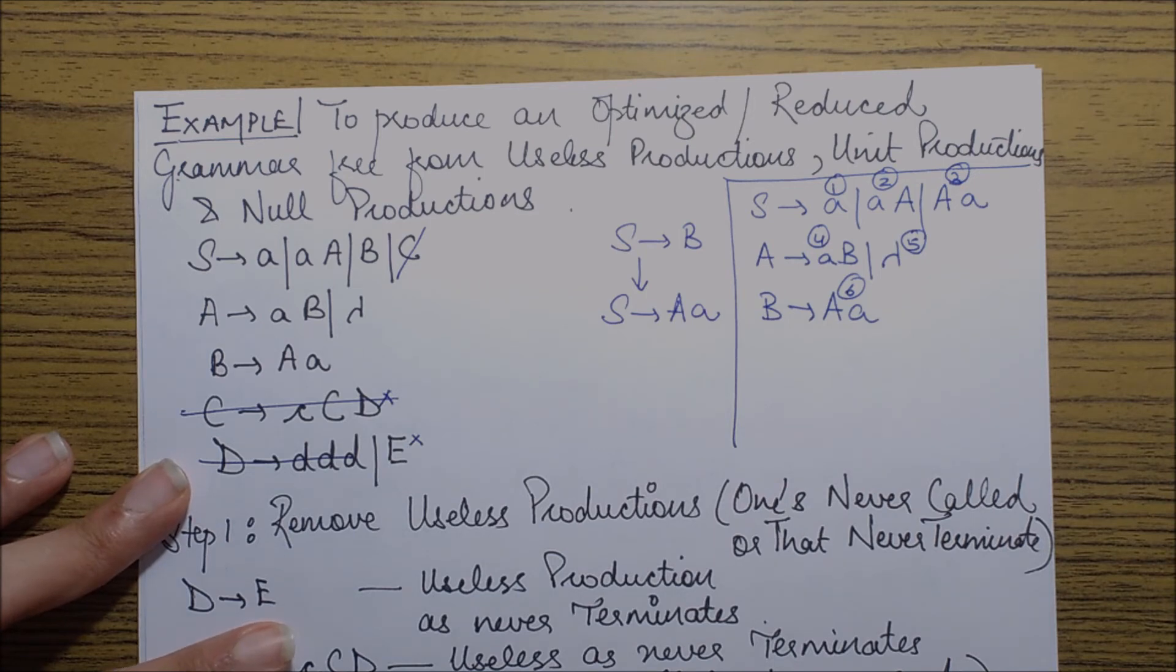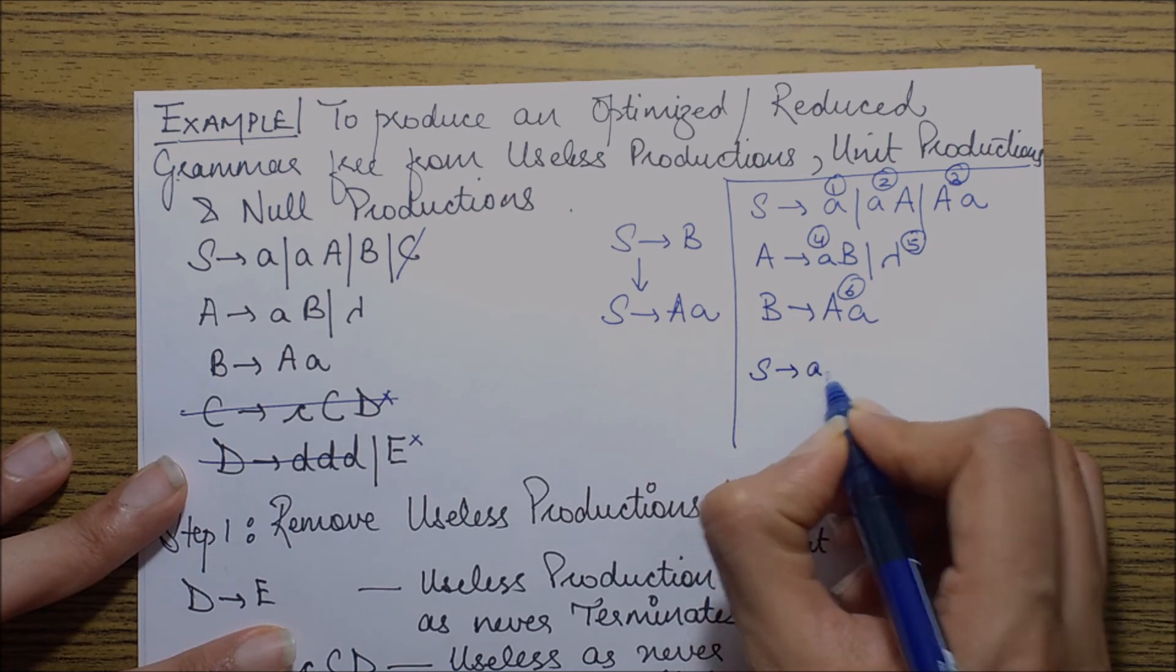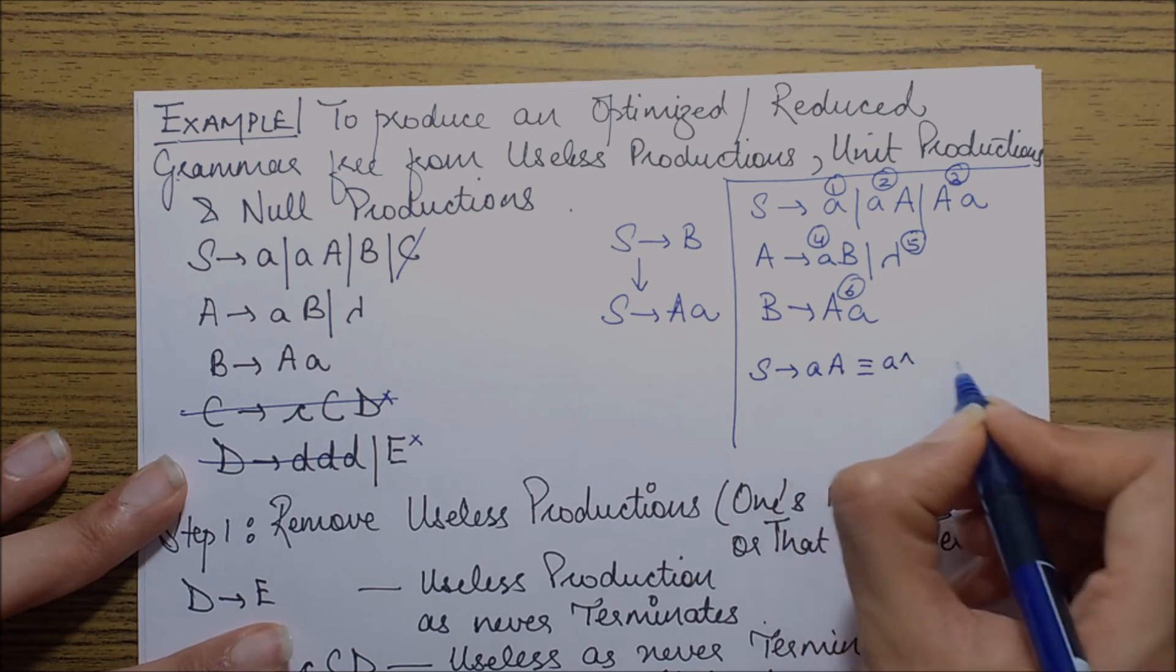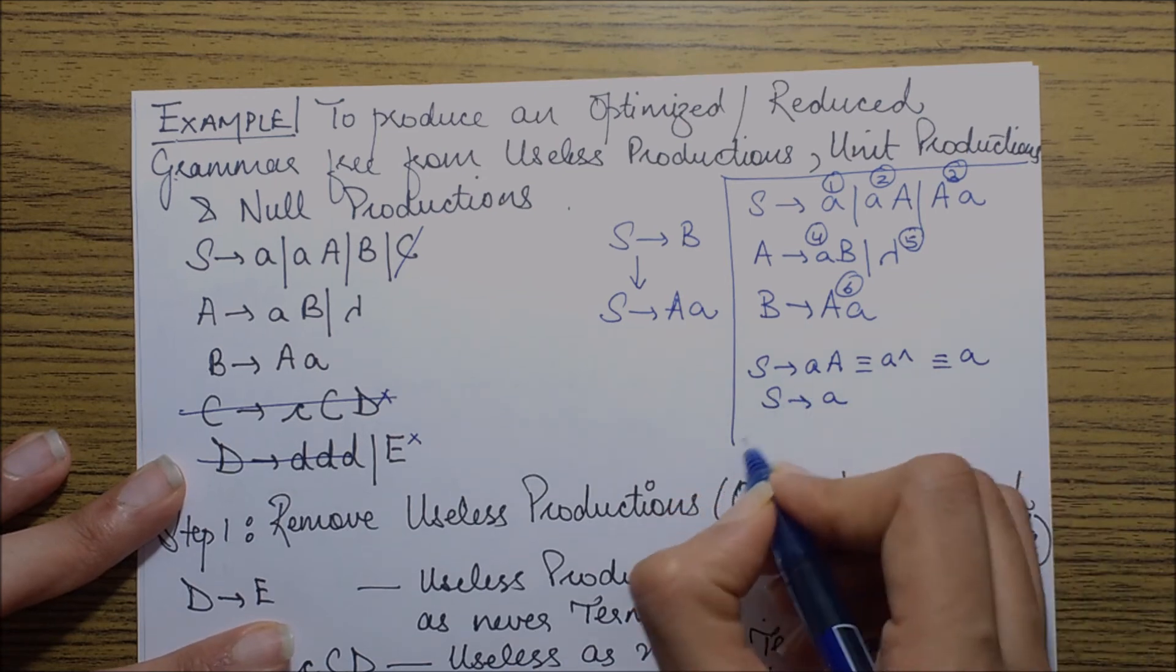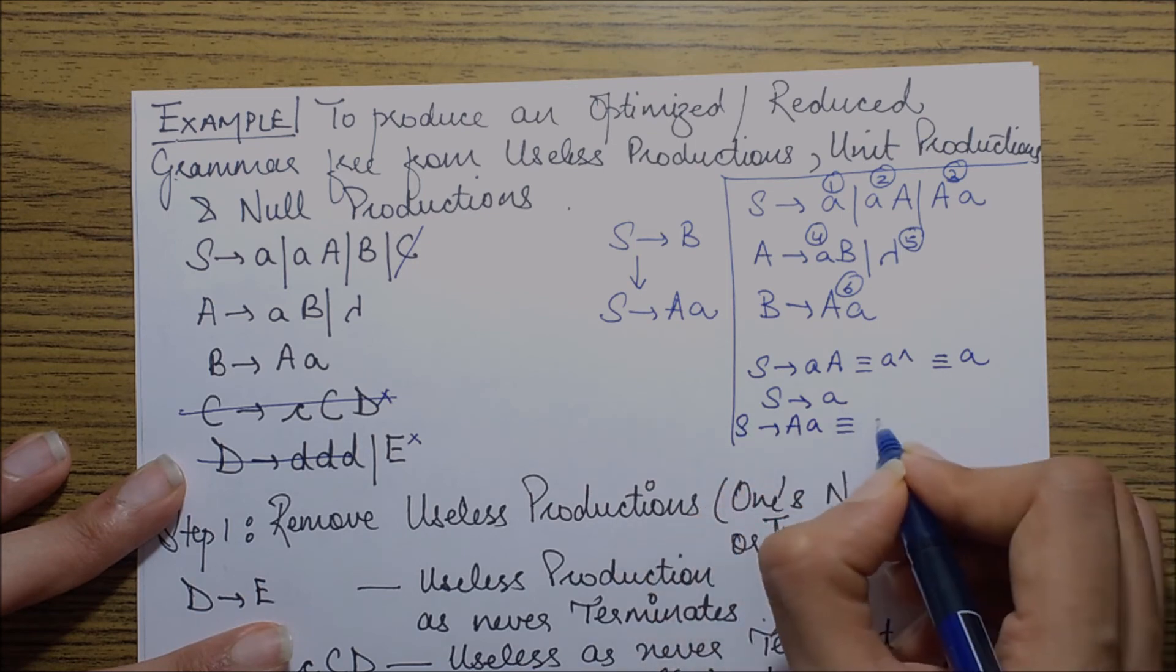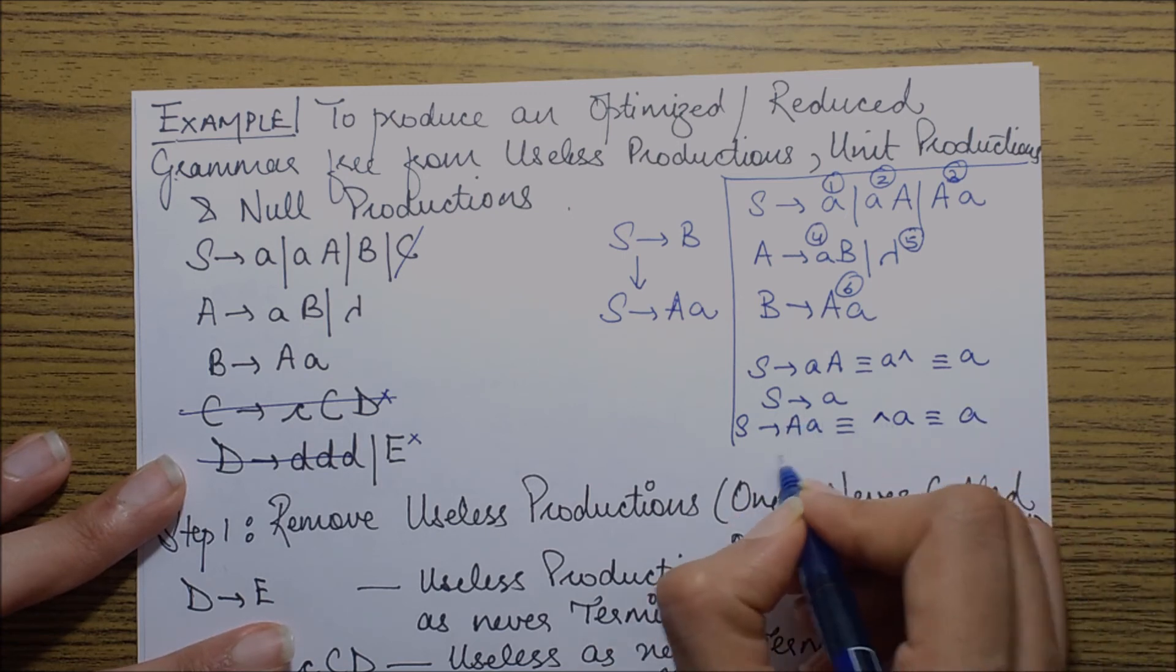Production 2, 3, and 6 contain A on the right hand side and hence we will be substituting A goes to lambda over there. So if I substitute A goes to lambda in productions 2 and 3, I will be getting S goes to A. That is, if I say that I substitute A goes to null over here, it will eventually be resulting into A null which equals to A. So I get a production S goes to A. Also the same happens if I substitute null in this production and I result in the same production S goes to A.